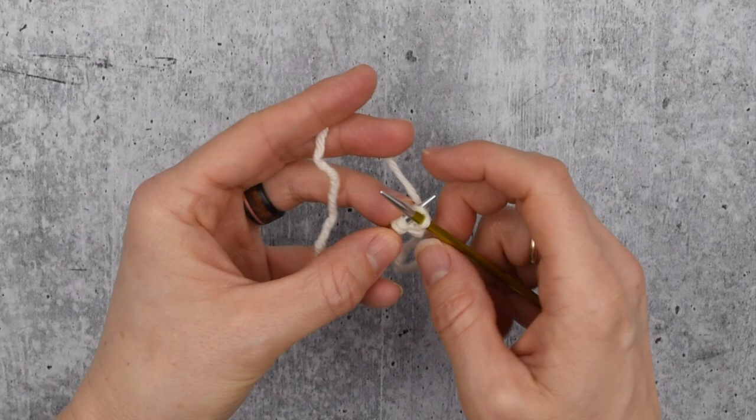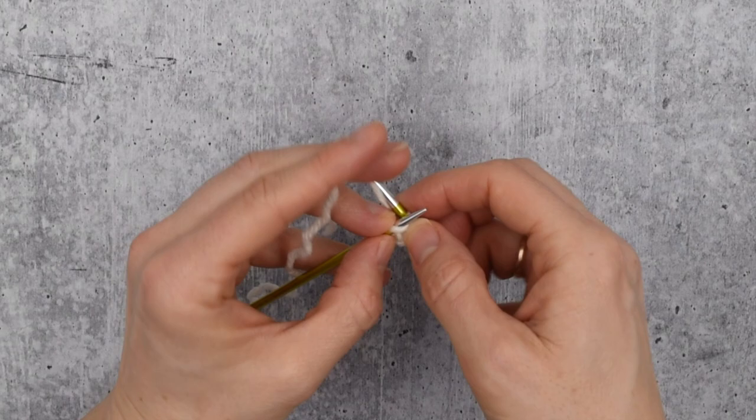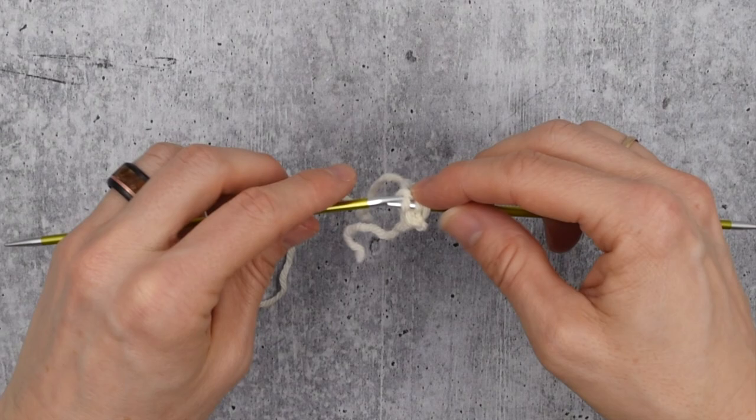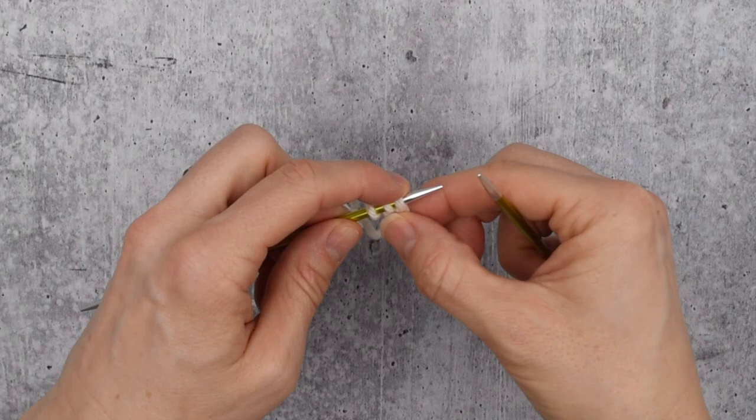Now if you have a magic loop or long circular needles that you are using, sliding this all the way back to the other side will be annoying. So instead of sliding it back at this point, just pop the stitches from one tip onto the next. Let me slow down and show you what I'm doing with the I-cord.